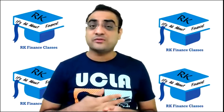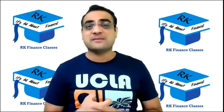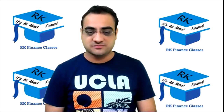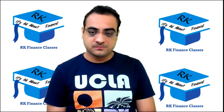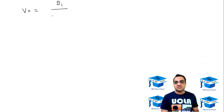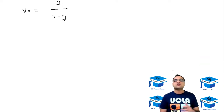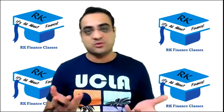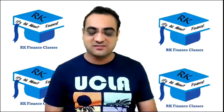We are trying to look at how Gordon came out with that formula d1 upon r minus g. We'll discuss how he derived d1 upon r minus g. Word of caution: this will be a very mathematics-oriented derivation, so if you don't like mathematics you will not understand it.